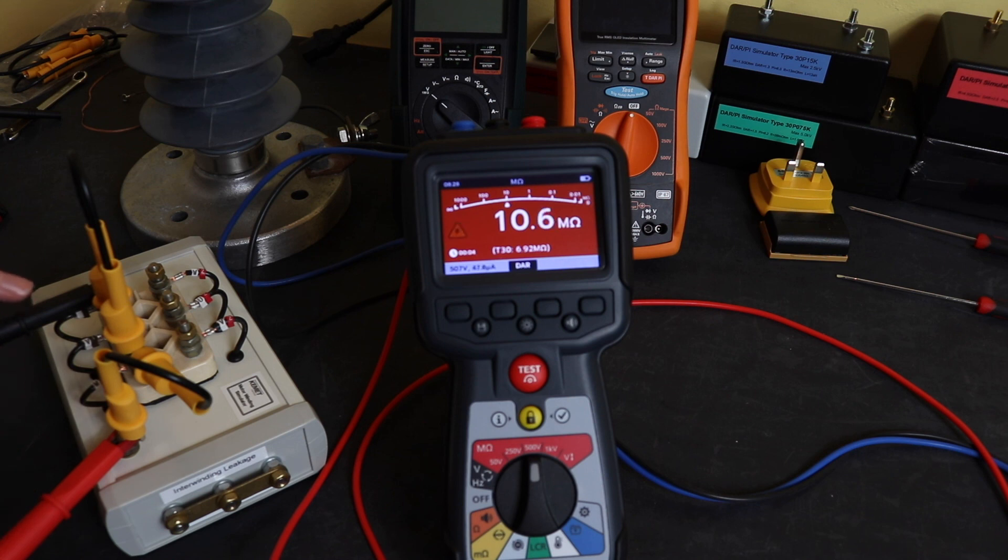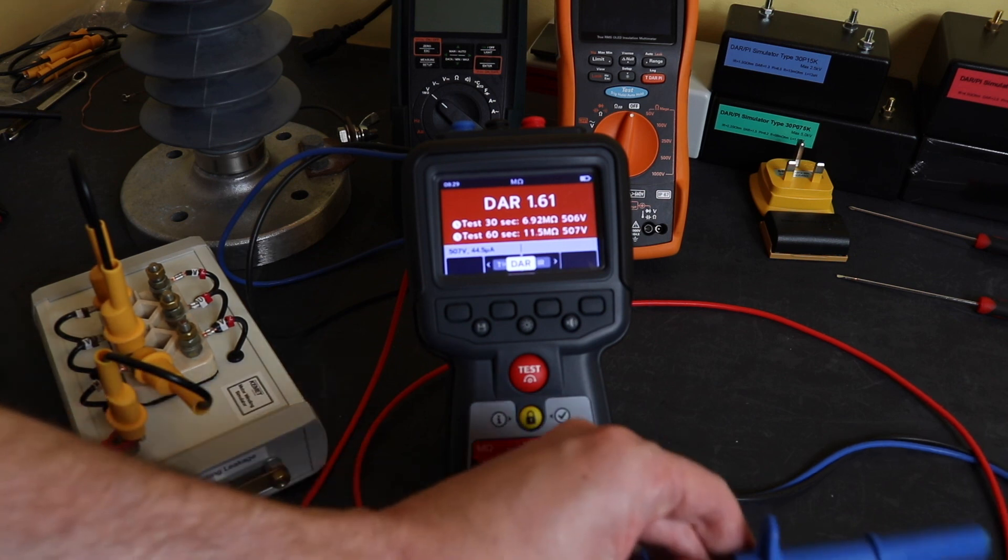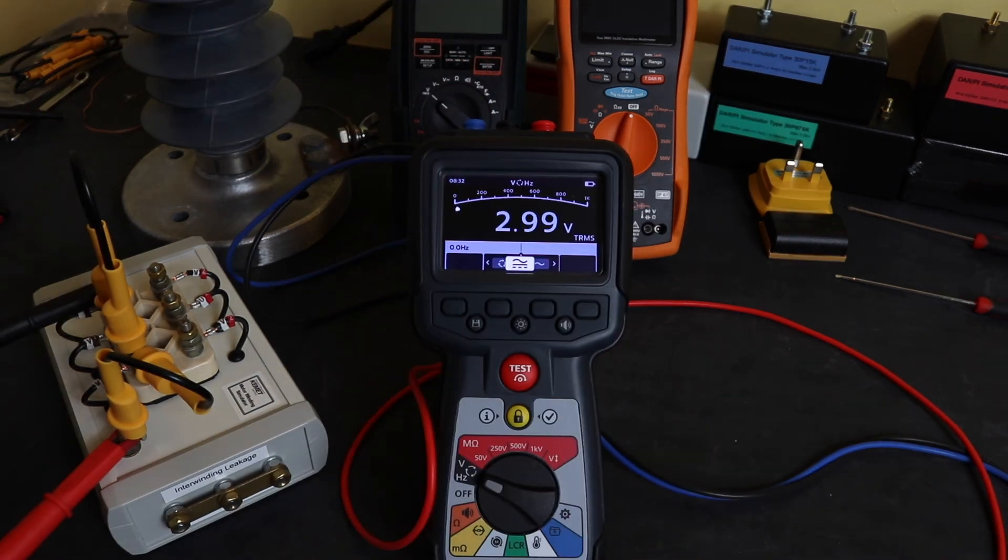This test that I'm doing now will measure the overall insulation resistance of this phase to earth and this phase to the other two phases via earth. There's my final reading: a DAR of 1.61, 6.92 megaohms at 30 seconds and 11.5 megaohms at 60 seconds. I'll actually have to short this for a period of time to remove any residual charge.